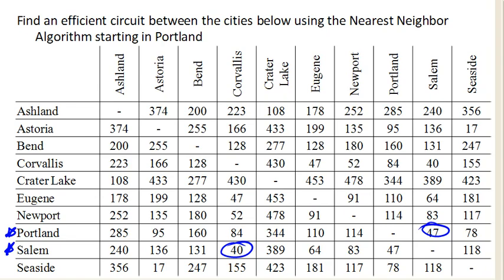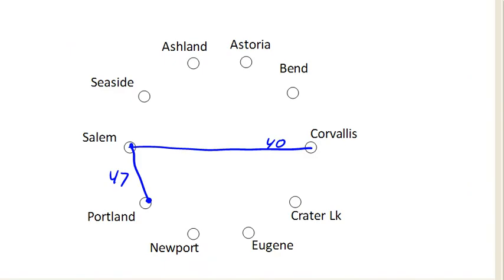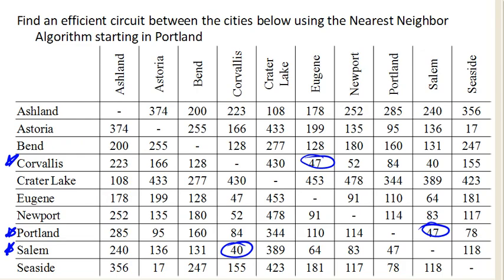Now we're in Corvallis. From Corvallis, where do I want to go next? I'd really love to go to Salem — wait, we just came from Salem, never mind. I'd really love to go to Eugene, because Eugene is the next closest. So from Corvallis, we're going to go to Eugene, which has a distance of 47 miles.